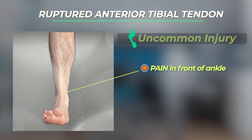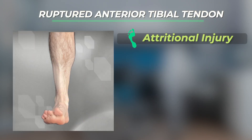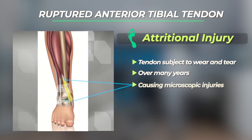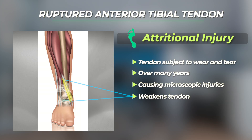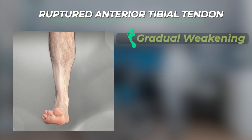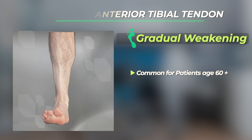A ruptured anterior tibial tendon is a relatively uncommon injury that leads to pain in the front of the ankle and weakness in lifting the foot up. The rupture is typically an attritional injury, meaning the tendon has usually been subject to wear and tear over many years. This causes microscopic injuries to the tendon which weaken it and predispose it to rupture. A history of chronic pain and swelling in the area around the tendon, secondary to tendonitis, is common. Because the tendon ruptures due to gradual weakening over time, most patients who suffer this injury are in their 60s and 70s.